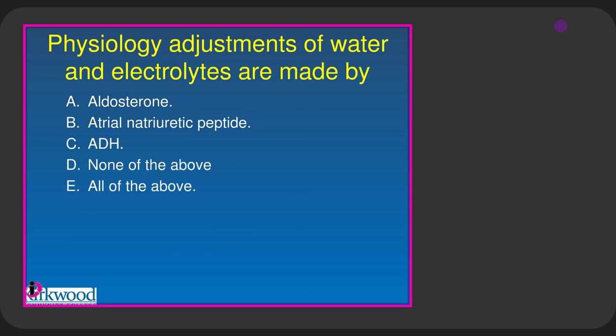Physiological adjustments of water and electrolytes are made by aldosterone, ANP, and ADH — so the answer is all of the above. The question was poorly worded because it couldn't include 'none of the above' as an option, so it should have just said 'all of the above.'